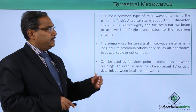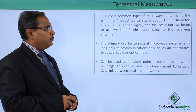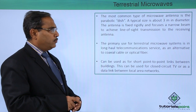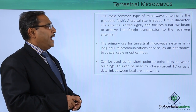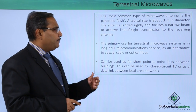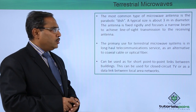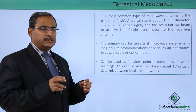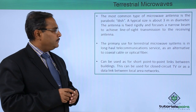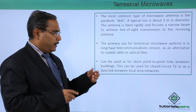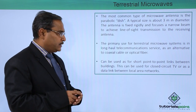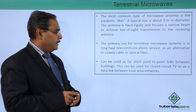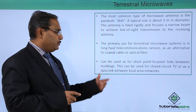Starting with terrestrial microwaves: the most common type of microwave antenna is the parabolic, also known as the dish antenna. A typical size is about 3 meters in diameter. The antenna is fixed rigidly and focuses a narrow beam to achieve line-of-sight transmission to the receiving antenna, meaning both the sending and receiving antennas will be facing each other. The primary use for terrestrial microwave systems is in long-haul telecommunications as an alternative to coaxial cable or optical fiber, and it can be used for short point-to-point links between buildings.